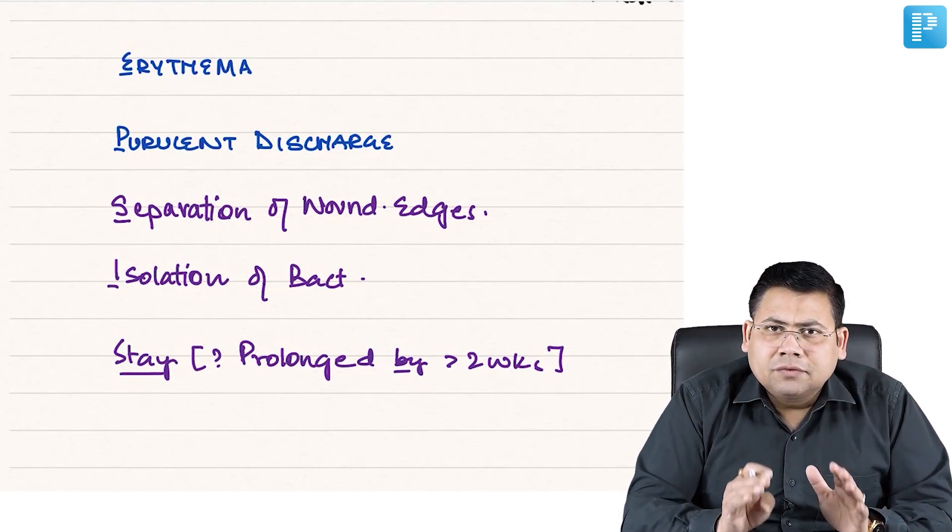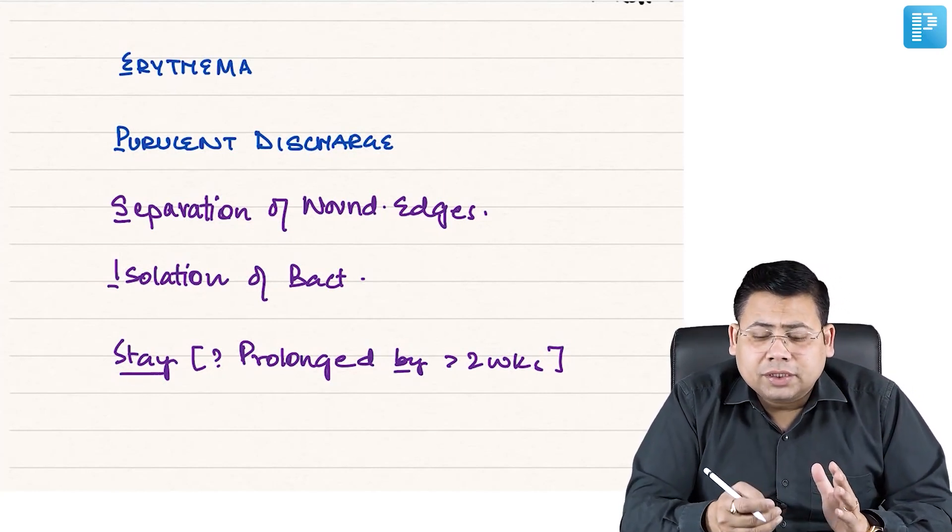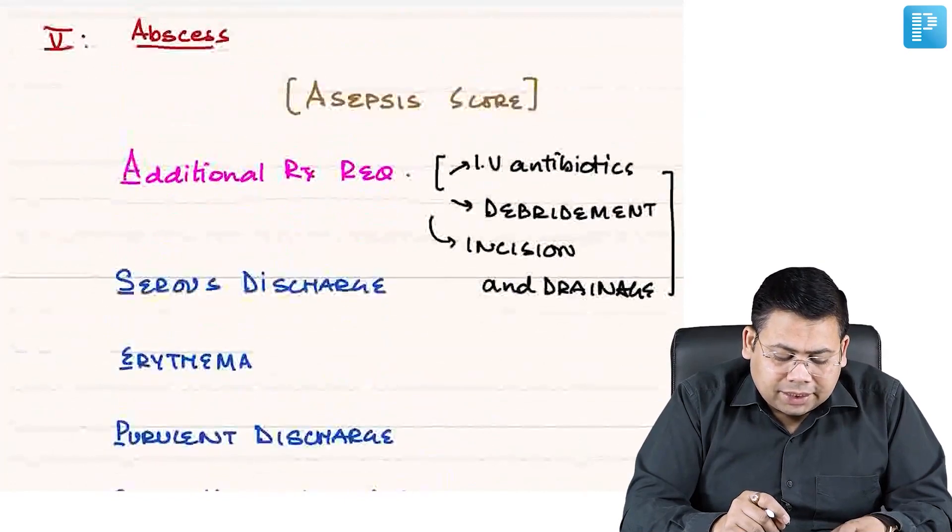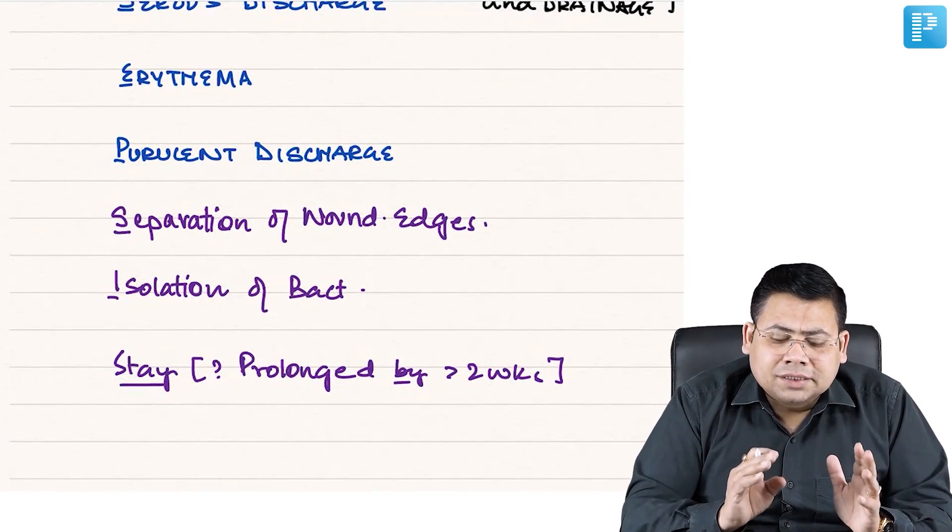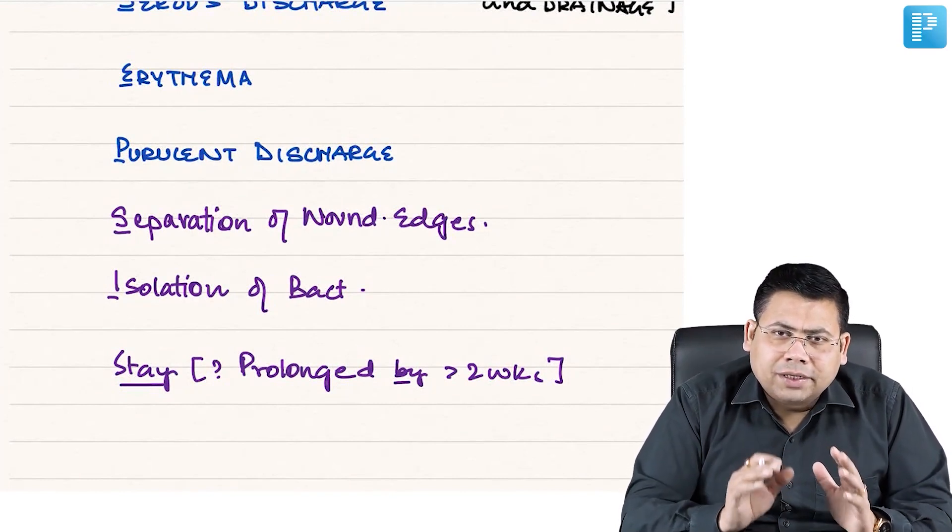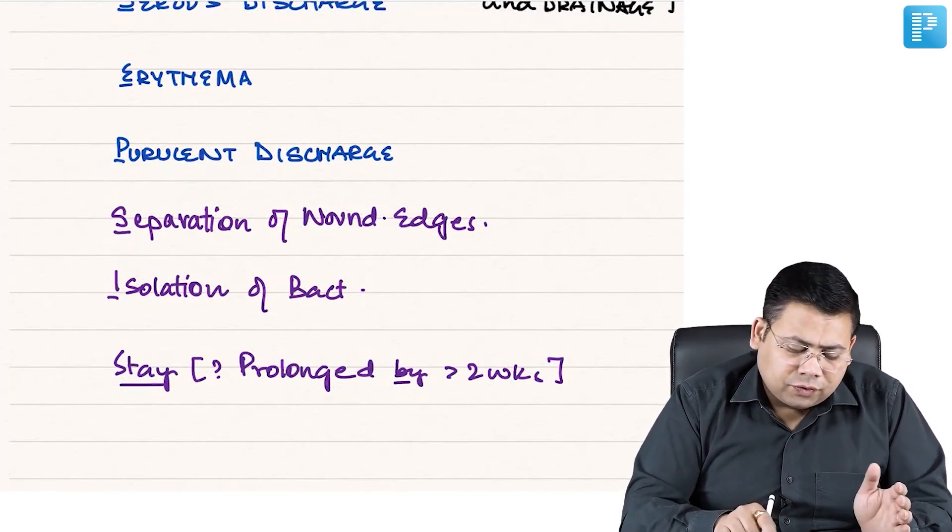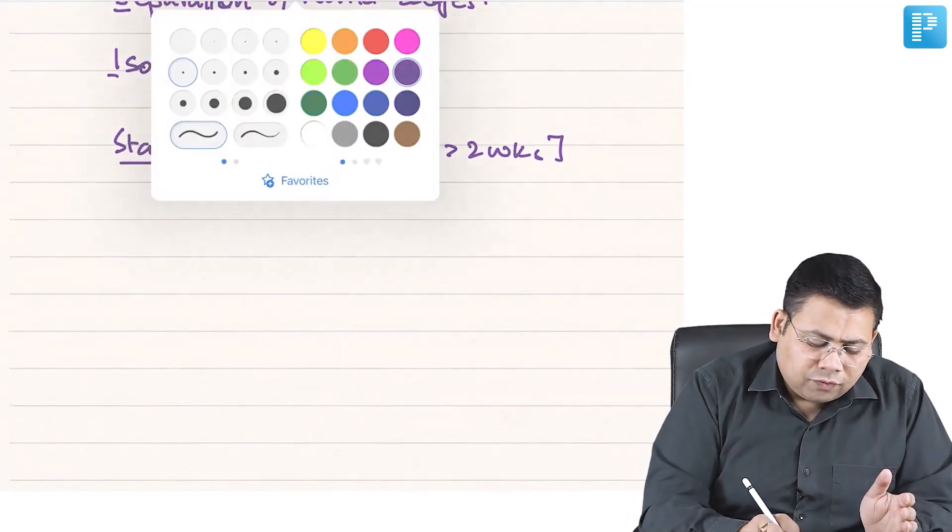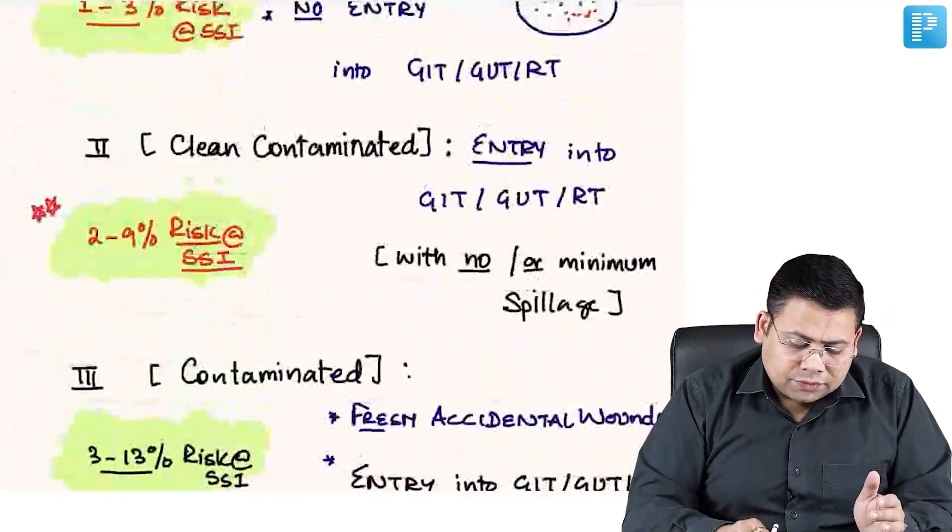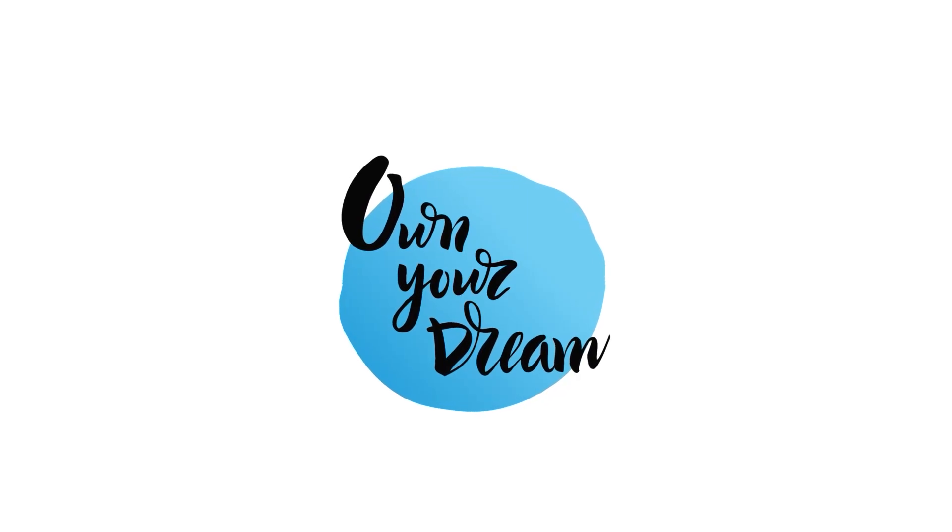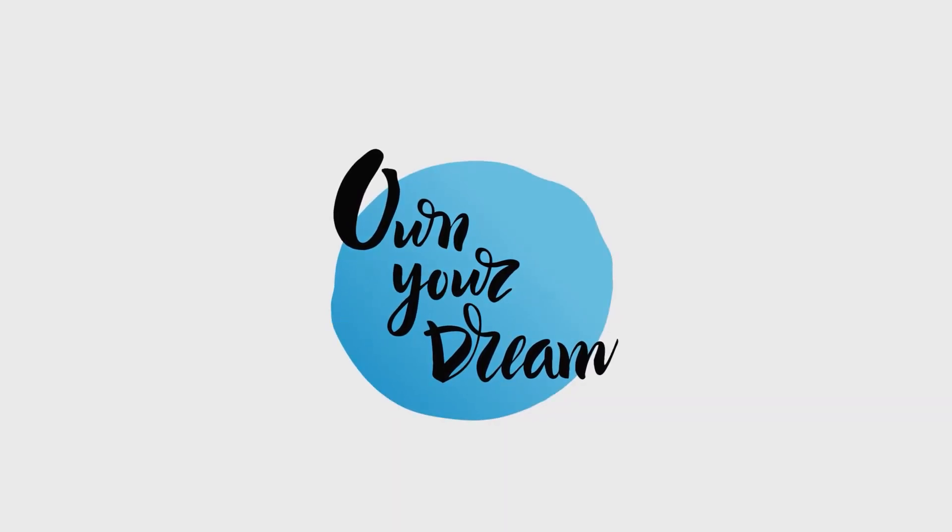So all these points - A-S-E-P-S-I-S, ASEPSIS - these are actually a point-based calculation system that we do. Next, let us move forward. We have completed the chapter of wounds.